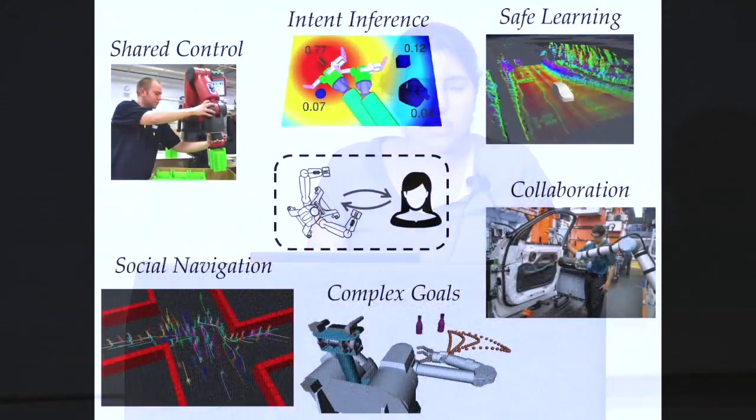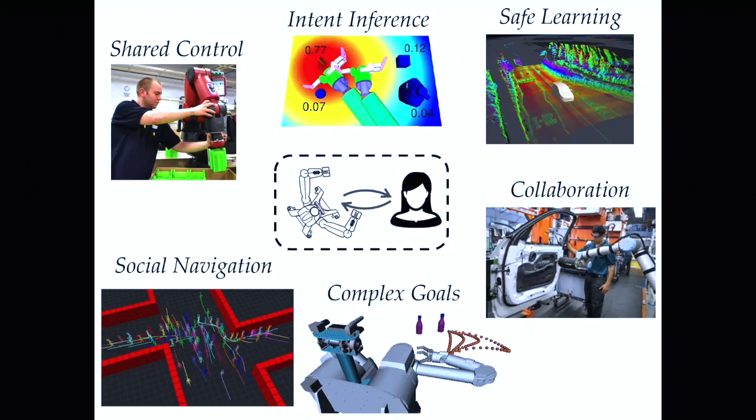That brings up a lot of questions about safety too, because these systems are in homes or on our roads. We're interested in applying formal methods, verification, and validation for some of these human-robot systems, to be able to give guarantees about them. Currently in my lab, some of the things we're looking at are shared control, collaboration, and coordination between humans and robots in home settings — thinking about safe control and how human and robot should bring their control inputs together to do a task safely.